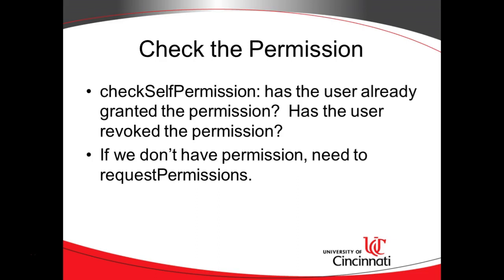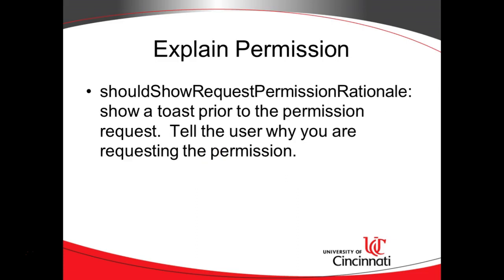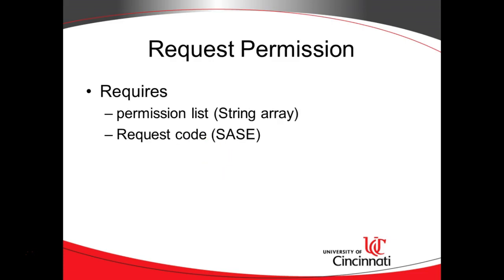So what are we going to do? Check the permission — has the user already granted it? Has the user revoked it? If we don't have permission, we need to request permissions. Explain the permission — this is an optional but good step where we tell the user why we want to request it. Then request the permission, which requires a permission list — the string array we talked about earlier. We take all of the permissions we want to request and put them together in an array, using strings to represent each permission. We ask for these permissions, the user has an opportunity to respond, and then we hear back from the user.